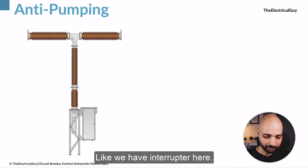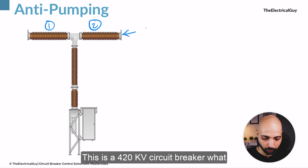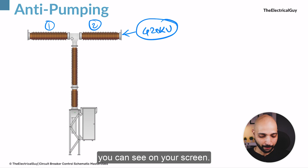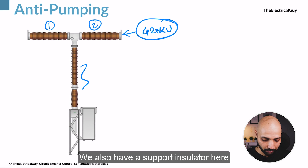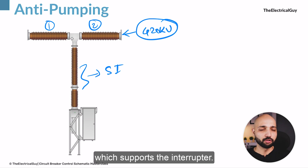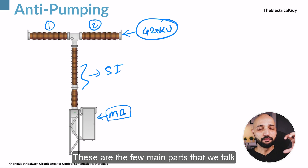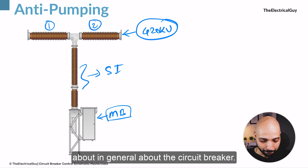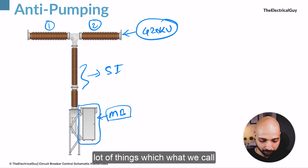When we talk about circuit breakers we generally talk about the main parts — we have an interrupter here, a first interrupter and a second interrupter. This is a 420 kV circuit breaker as you can see on your screen. We also have a support insulator here which supports the structure, and then we also have a mechanism box. These are the few main parts we talk about in general, but inside this marshaling box there are a lot of things.